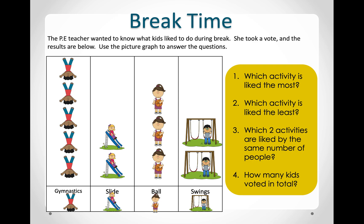Now they ask us, how many kids voted in total? We have to count all the kids together. Remember, when we use the word total, we have to add. So we count: 1, 2, 3, 4, 5, 6, 7, 8, 9, 10, 11, 12. So 12 kids voted in total.